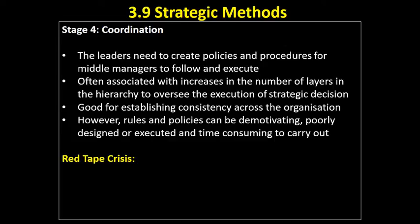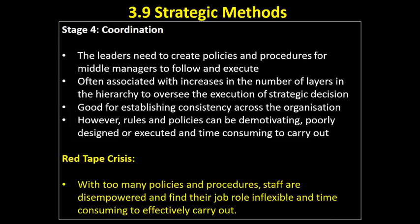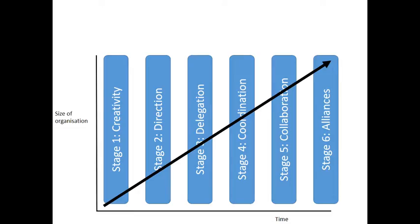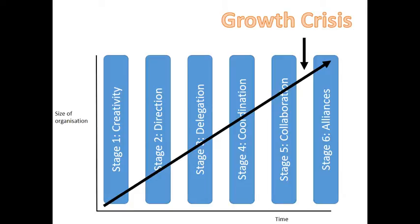This leads to our crisis where we've got too much red tape, too much bureaucracy. It's too difficult and time-consuming to make decisions; staff start feeling disempowered and the job becomes inflexible. So we're at the stage where we need more collaboration — more working together, more flexibility within the organization — to enable us to continue to grow and satisfy more customers.